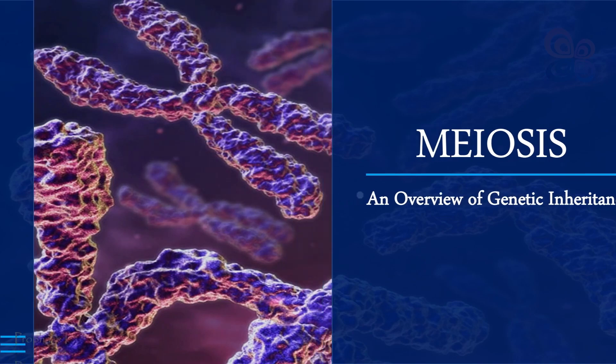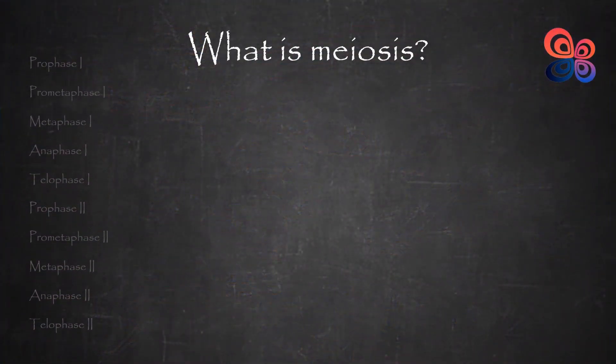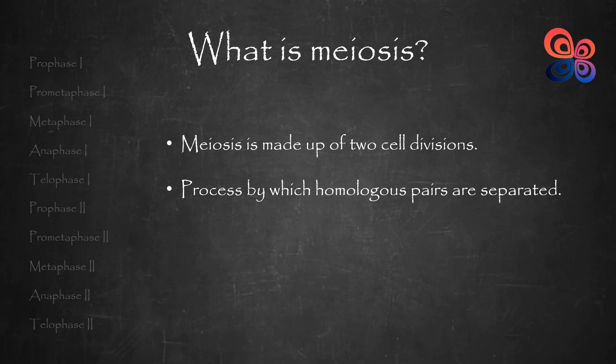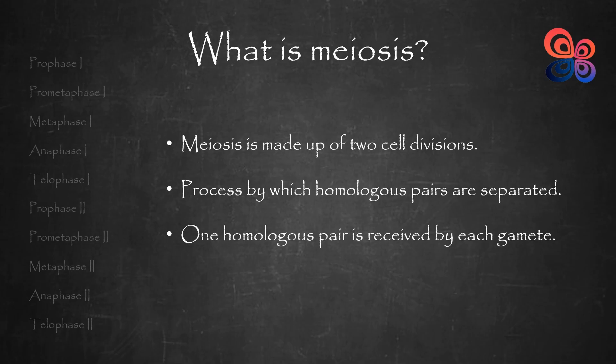Meiosis is made up of meiosis 1 and meiosis 2, which are two cell divisions. Meiosis is the process by which homologous pairs are separated, decreasing the diploid or 2N number of chromosomes to the haploid or N number. Only one homologous pair is received by each gamete created during meiosis. For instance, one of each pair of 23 chromosomes is present in each human egg and sperm cell generated in the ovary and testis, respectively.